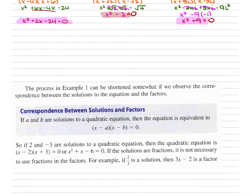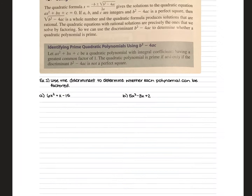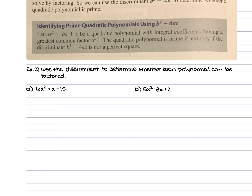For the next set of examples, we use the discriminant to determine whether each polynomial can be factored. The discriminant is b squared minus 4ac. If the result is greater than 0, we have two real solutions and it can be factored. If it equals 0, we have one real solution and it can still be factored. If it's less than 0, we have two imaginary solutions and it cannot be factored.